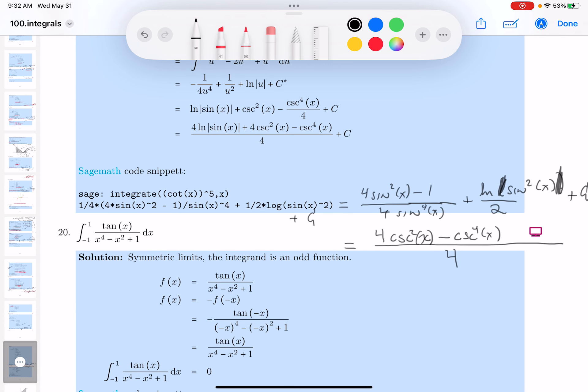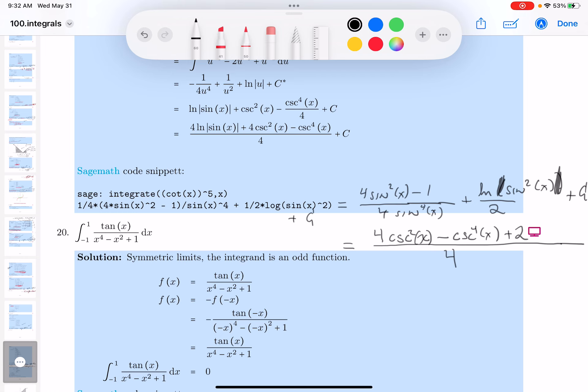And then I'm going to get two. Sorry about writing over my work, by the way. The natural log of the absolute value of sine squared plus C.